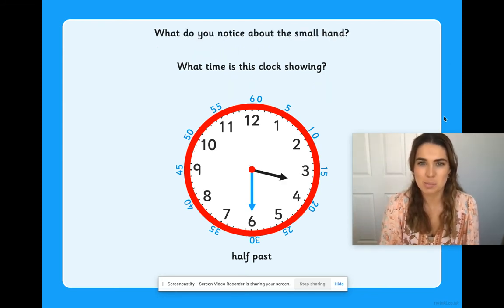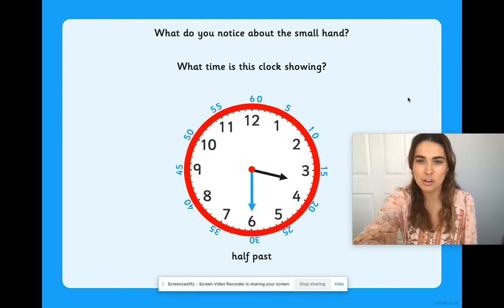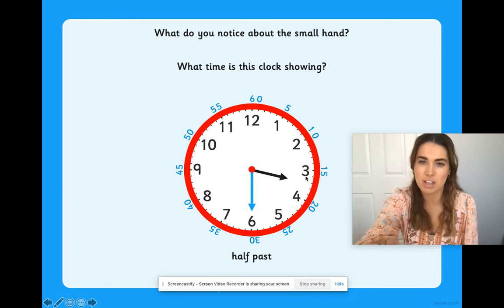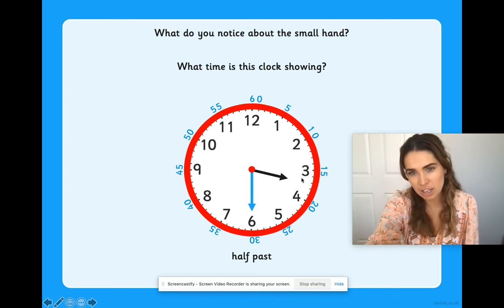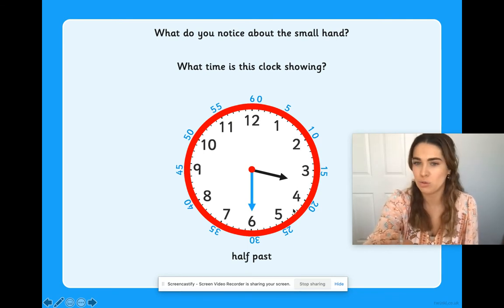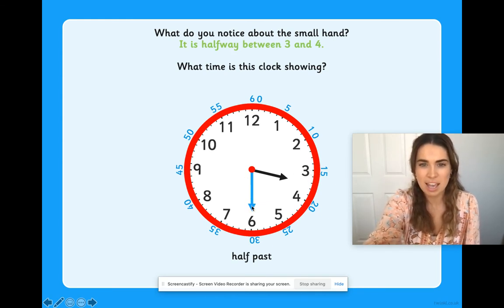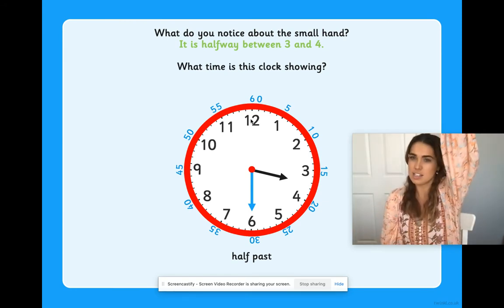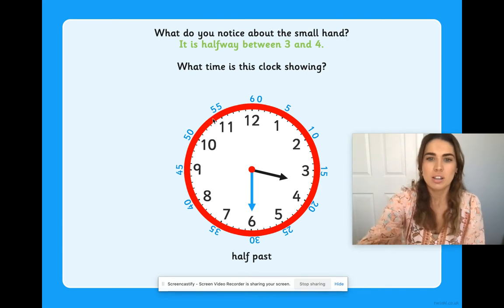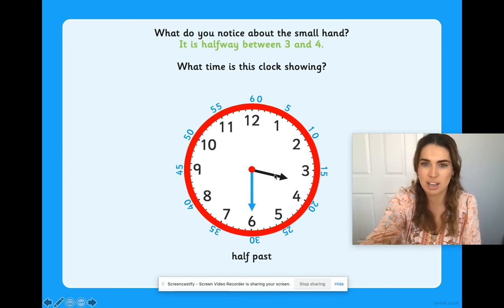What do you notice about the small hand? Did you notice it's halfway between the 3 and the 4? So if I'm moving in that clockwise direction, I've just gone past the 3. I'm not quite at the 4. So what o'clock is it? It's in the 3 o'clock. But the big hand is not pointing up at the 12. Remember, O'clock is when the long hand is right up top. The long hand is just right down bottom. And I know that that's my half past time. So it's half past three. This hand has moved halfway past the 3.